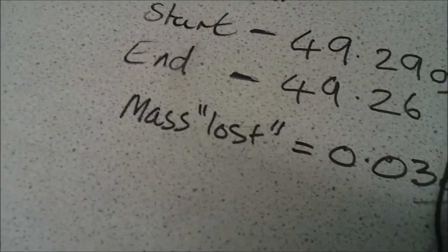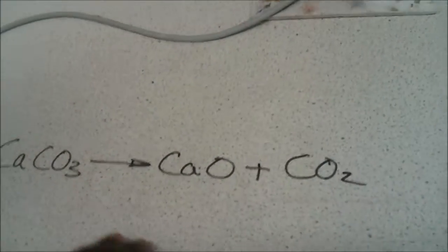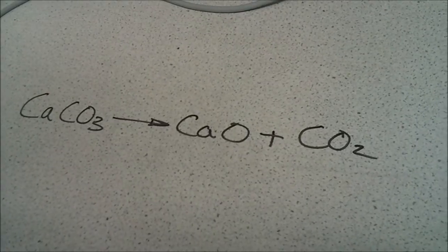OK, so what you actually have here is the equation for chemical decomposition. So you've got calcium carbonate breaking down into calcium oxide and carbon dioxide.